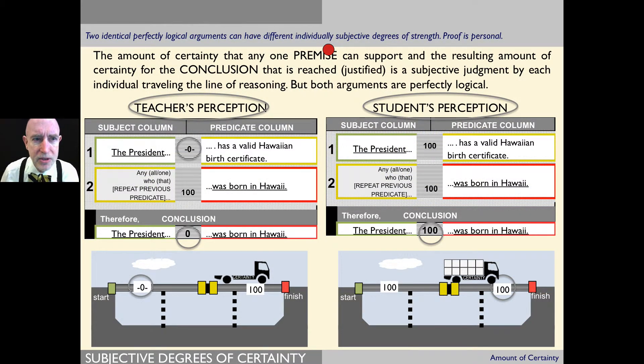Now you'll notice that we've talked about just one individual's perception, but when you have two people—here we have a teacher's perception and a student's perception.